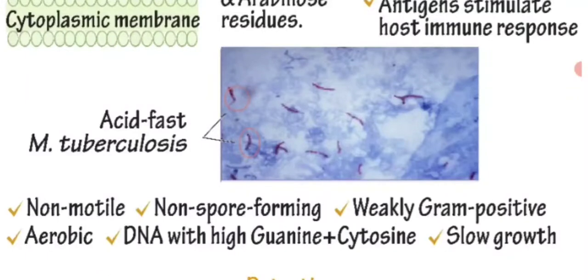The bacteria are non-spore forming, weakly gram-positive, and strictly aerobic. They have DNA with high guanine and cytosine content, and their growth is very slow.